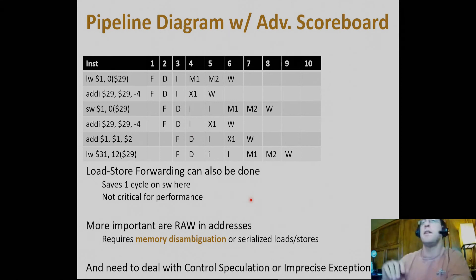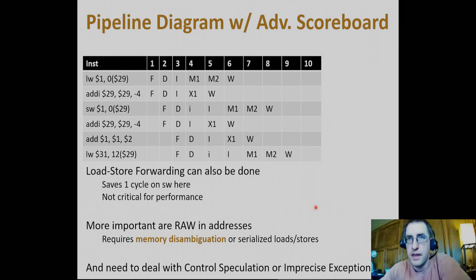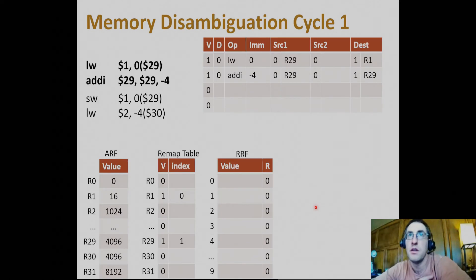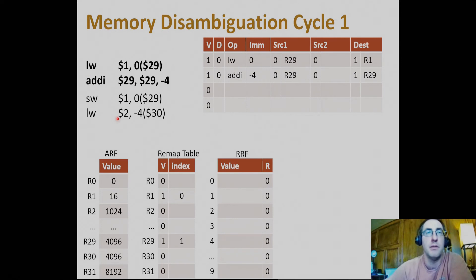A bigger problem is hazards through memory. If address 0 of $29 is the same as another access — if it were the same — we'd have a read-after-write hazard and would have to preserve that. Processors with out-of-order execution must first determine the effective addresses of loads and stores before allowing them to be scheduled across one another. This is called memory disambiguation — figuring out what actual memory addresses are being accessed. Here's a little snippet of code designed to illustrate this problem.